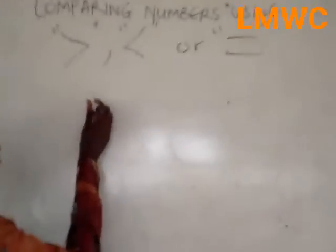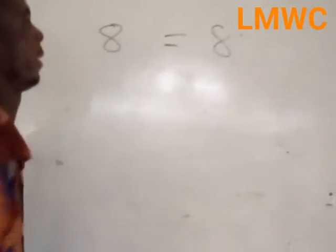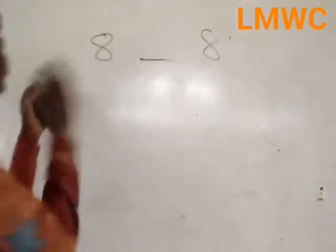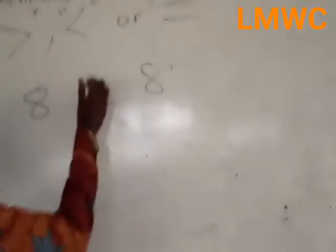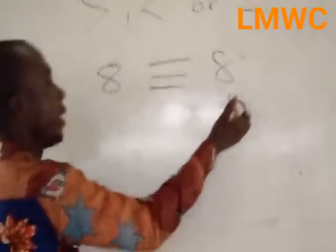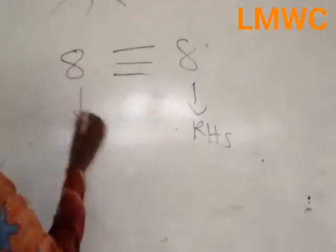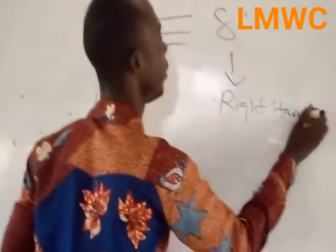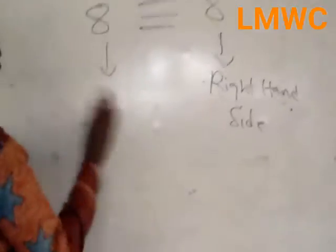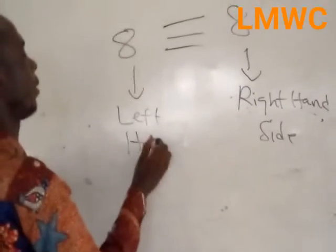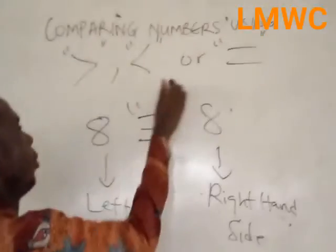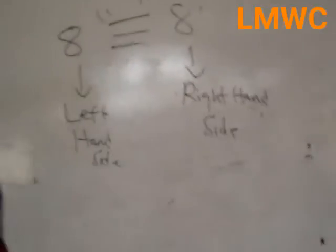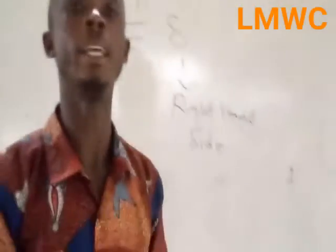If I give you the number one at the right-hand side and another number one at the left-hand side, and you are asked to compare — always, if they give you the same numbers, this means the numbers are equal in values. So you put your equal to here. This is the right-hand side and this is the left-hand side. You see they are equal, because the number at the right-hand side is equal to the number at the left-hand side.